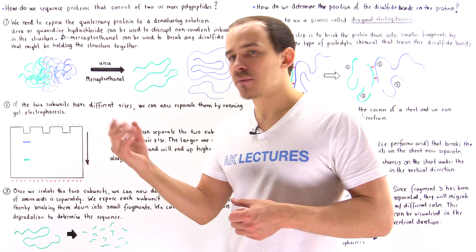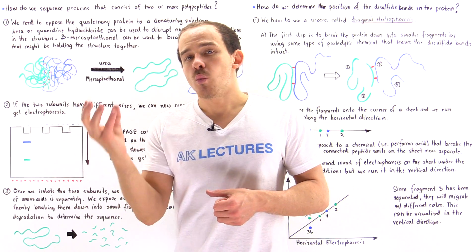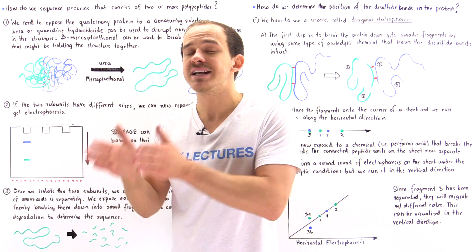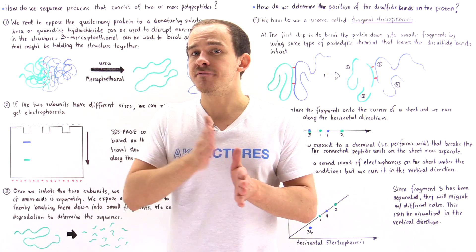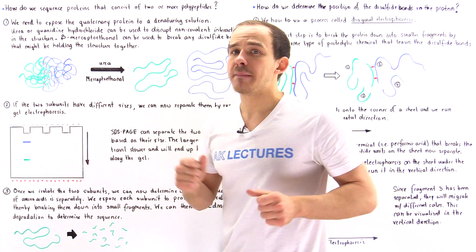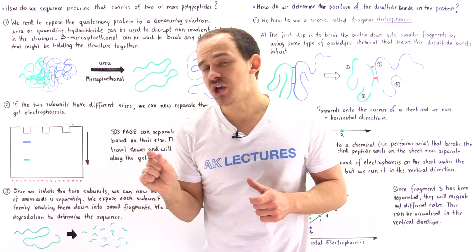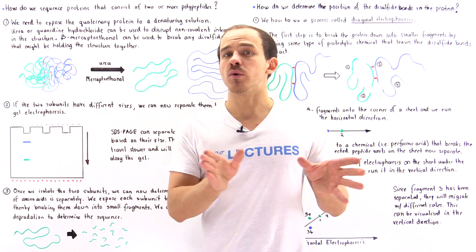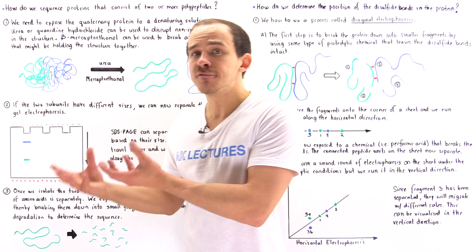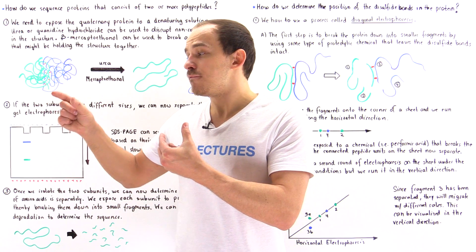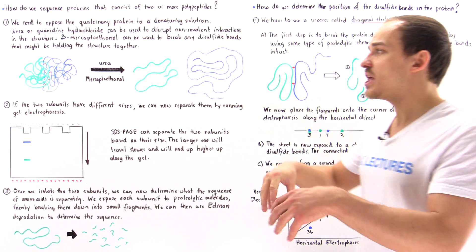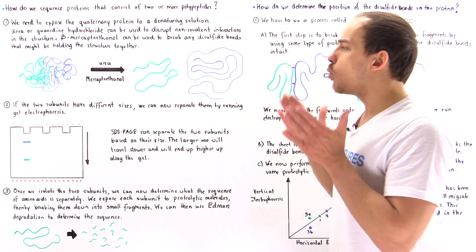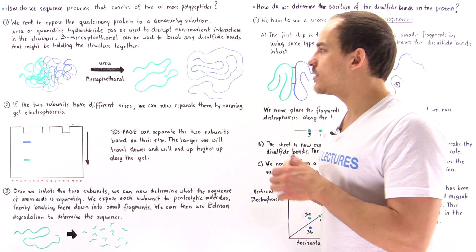For example, we take beaker number one containing our green polypeptide chain, and we expose that polypeptide chain to proteolytic molecules that cleave our peptide at specific locations. We essentially cut up and divide this long polypeptide chain into many small fragments. Then we take each one of these fragments and run Edman degradation on each fragment — that allows us to determine exactly what the sequence is of each fragment. Then we repeat the process with a different proteolytic enzyme, and eventually we can find what the order is of these different fragments in that polypeptide chain. Then we repeat the process with the larger blue polypeptide chain, and at the end we're able to sequence the amino acids and how they're arranged.